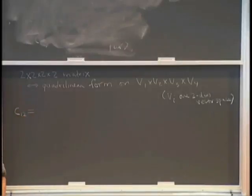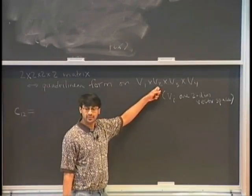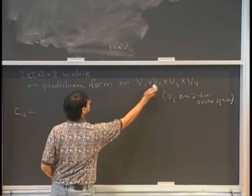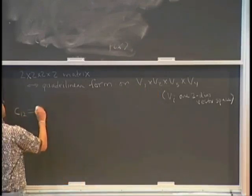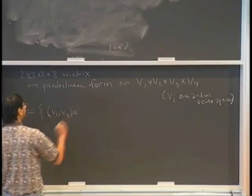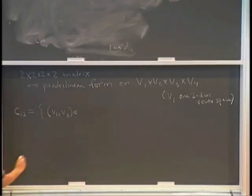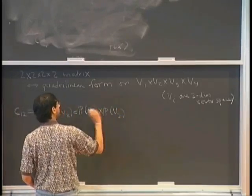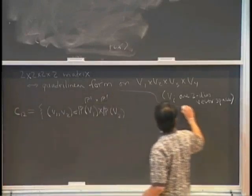So if we have a quadrilinear form on a product of four two-dimensional vector spaces, then one can define a set C_{12} in PV1 cross PV2. PV1 is like a projective line, PV2 is a projective line — the projectivization of these vector spaces. If you take the product PV1 cross PV2, we're going to define a genus 1 curve inside that product. So this is like a P1 cross P1.